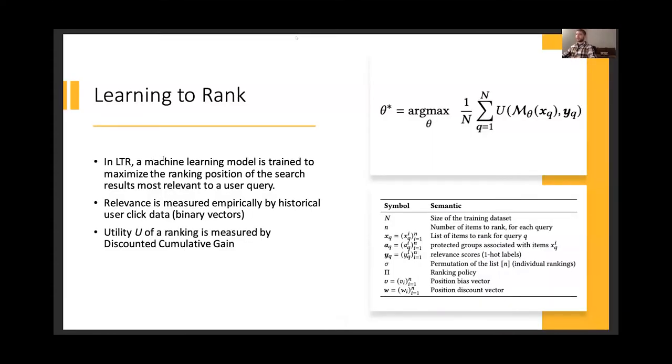So in typical learning to rank, you have a model, call it M in this notation, parameterized by theta the weights of your model. It acts on item feature embeddings, so every item that needs to be ranked has a feature embedding. And the supervision for the model is provided by user click data, usually in the form of binary vectors indicating whether or not a particular user for a given query clicked on a result. And so the goal is just to maximize empirically the utility of your highest ranked items, roughly speaking.